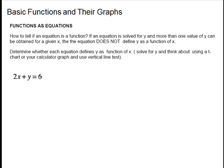Next, we look at how to tell if an equation is a function. This is the hardest one. We have a couple things we can do if an equation is solved for y — isolate your y, and if more than one value of y can be obtained for a given x, like you get y equals plus or minus, then the equation does not define y as a function of x. You don't want to get the plus or minus if you isolate the y. The other thing you can do is determine what the graph looks like, or isolate your y and put it into your calculator, and then use the vertical line test.